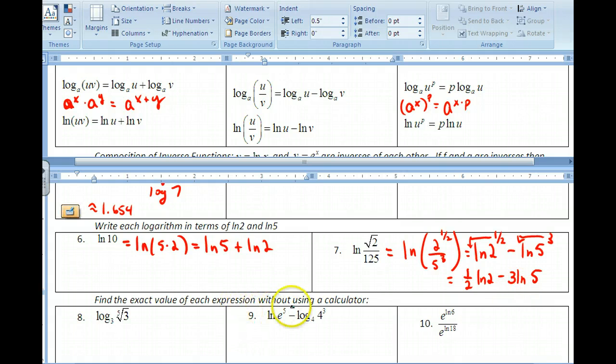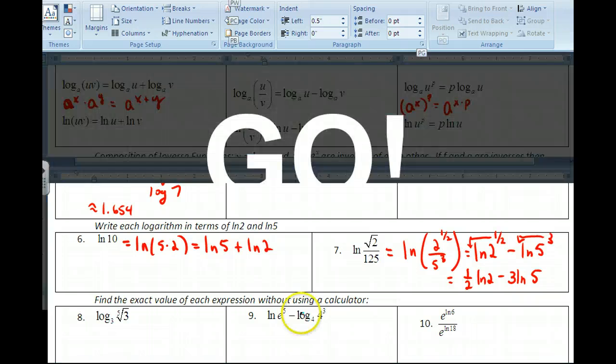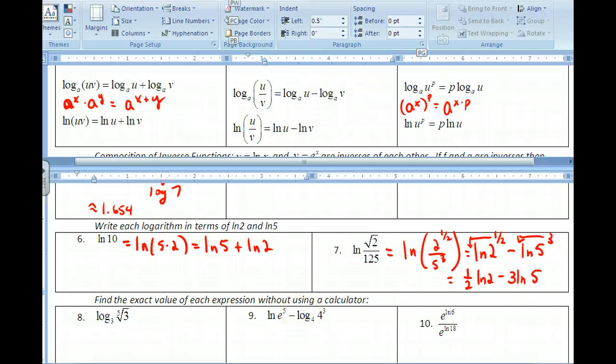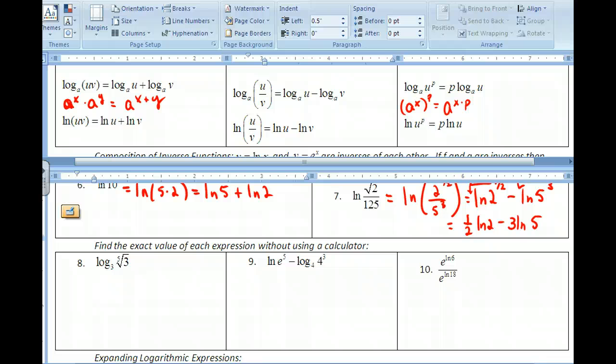The next one: find the exact value of each expression without using a calculator. Well it looks like I've got a base of 3 and a base of 3. So I'm just going to rewrite this with the exponent. Log base 3 of cube root. If it's cube root you always got to think is it negative 5 or 1 fifth? Well it's 1 fifth.